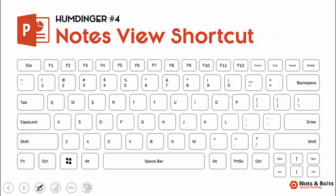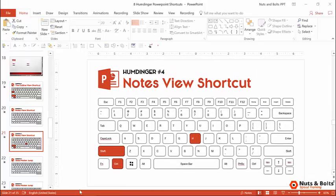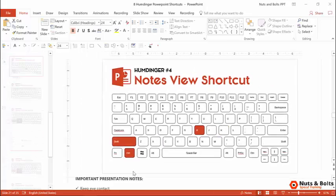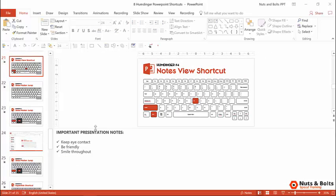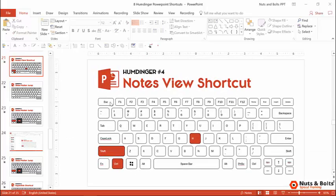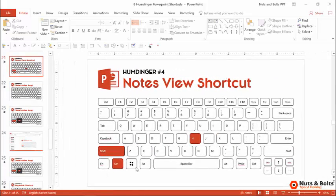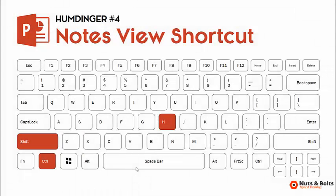For humdinger number four, we have the notes view shortcut, which is Ctrl+Shift+H on your keyboard. Back in the normal view, notice that every time you use Ctrl+Shift+Tab, the notes pane opens and stays open. Well, Ctrl+Shift+H hit once will close it, hit a second time it will open up — so there are your presentation notes: 'keep eye contact, be friendly, and don't forget to smile throughout.' You can just use Ctrl+Shift+H to open and close the notes pane. If you're using the Ctrl+Shift+Tab shortcut, you can also use Ctrl+Shift+H to close it out. You can see how you can start to walk around your entire environment once you get your keyboard shortcuts down. That's humdinger number four, the notes view shortcut, Ctrl+Shift+H.